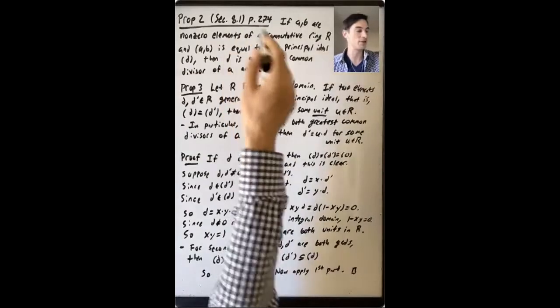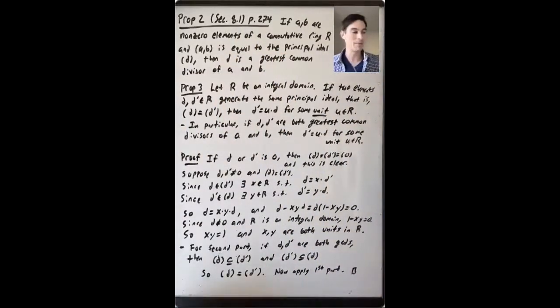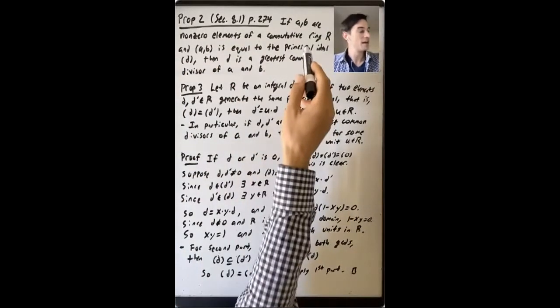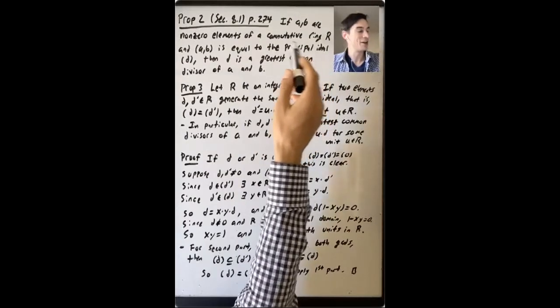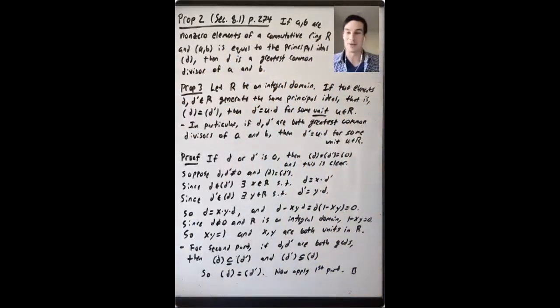So this is a useful thing to keep in mind: in the case where the ideal generated by A and B is principal, we know that we have a nice GCD. Just take a generator for that principal ideal.